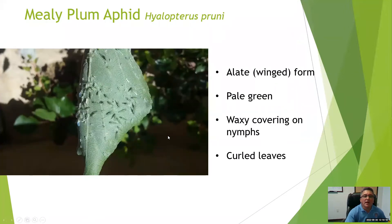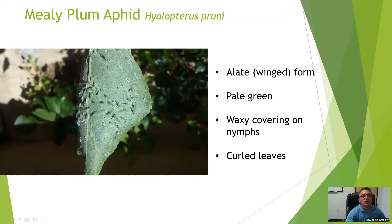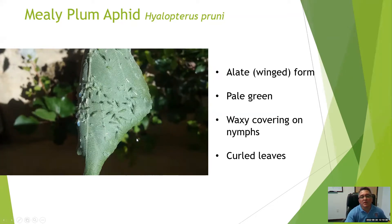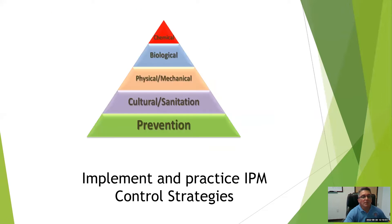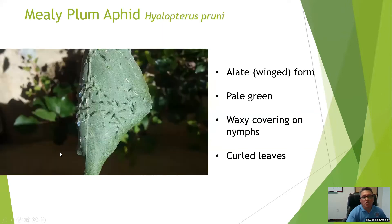Another interesting thing about aphids is that whenever the host is stressed beyond the point of providing nutrients, they actually begin to change forms and develop wings. These are winged forms, or alates. This particular slide is from apricots showing a mealy plum aphid. The curling of the leaf is a telltale sign of aphid damage. Aphids have the potential to reproduce in huge numbers in a short period of time, especially when temperatures are cooler.